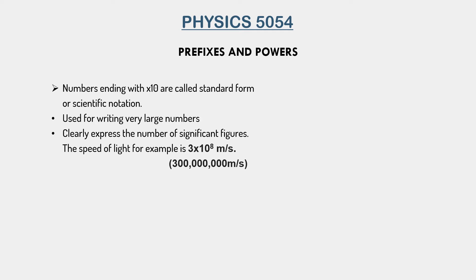The key to converting standard form to normal numbers is to consider the power. If the power is positive, you move the decimal point that many places to the right, whereas when the power is negative, you move it to the left. Here the power of 10 was a positive 8, so you move the decimal point 8 places to the right, adding a zero each time — basically adding 8 zeros after the 3. If instead the power had been negative 8, the answer would have had 8 zeros before the 3.